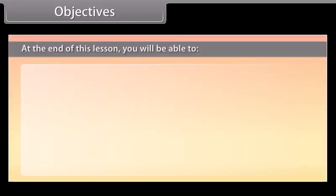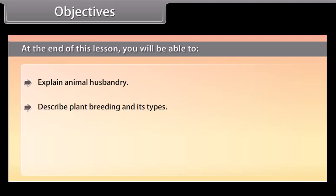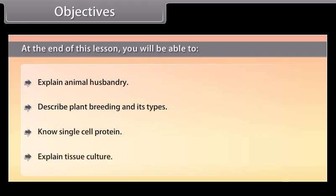At the end of this lesson, you will be able to: explain animal husbandry, describe plant breeding and its types, single cell protein, and explain tissue culture.